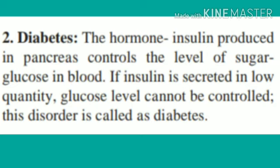Diabetes: the hormone insulin, produced in the pancreas, controls the level of sugar glucose in the blood. If insulin is secreted in low quantity, the glucose level cannot be controlled. This disorder is called diabetes.